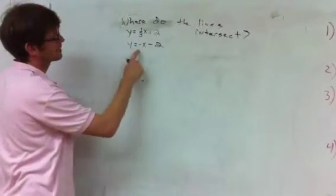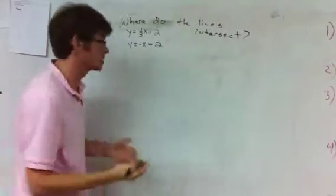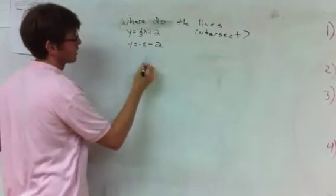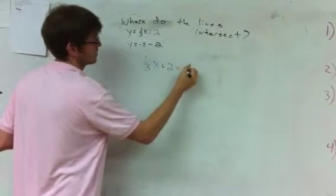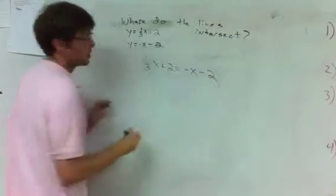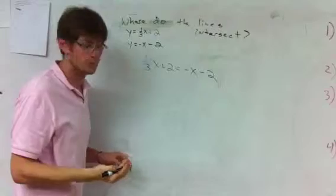y equals 1 third x plus 2, y equals negative x minus 2. The first thing I want to do is set these equations equal to each other. So I'm going to write 1 third x plus 2 equals negative x minus 2. I'm allowed to do that because we have a y in each equation, and it's the substitution property.